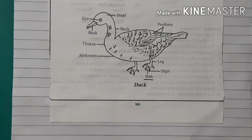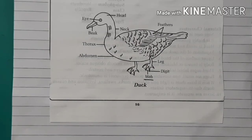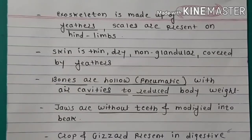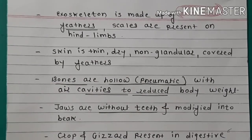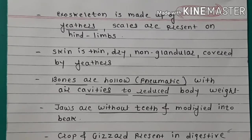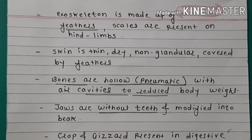Body is streamlined — that is boat-shaped — to reduce resistance during flight. They are homeotherms, that is warm-blooded; their body temperature remains constant. Exoskeleton is made up of feathers. Scales are present on hind limbs. Skin is thin, dry, non-glandular, covered by feathers. Bones are hollow — that is pneumatic — with air cavities, to reduce body weight.